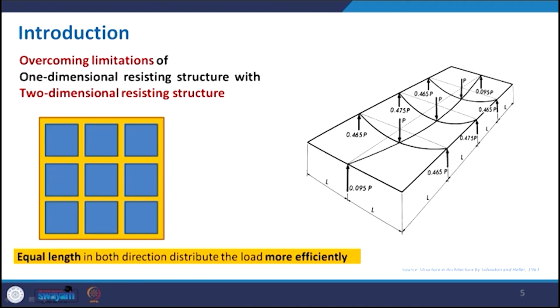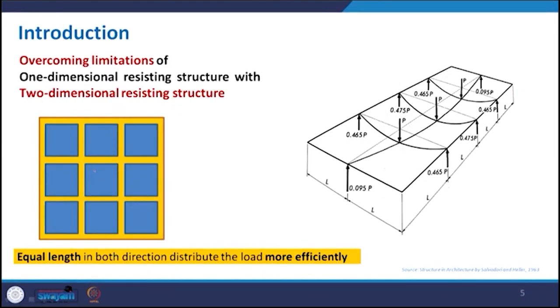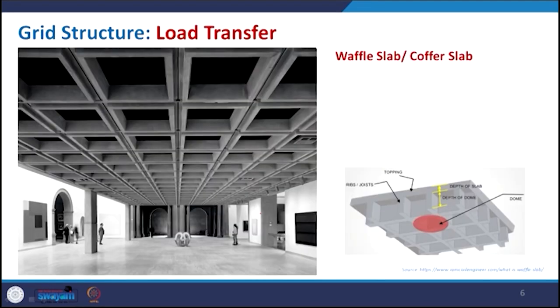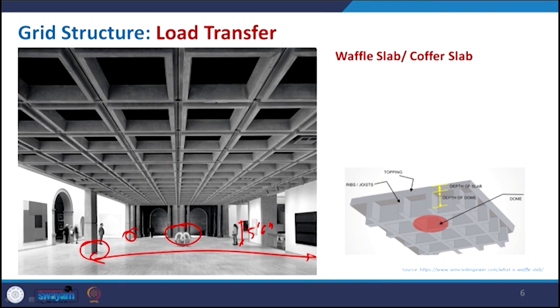The moment you make the grid rectangular, the load is distributed differently depending on the shorter and further corners — load essentially goes more to the shorter side. Here you can see the value 8/18 is the load transmitted to one particular support, while it is less on the other. If you increase the number of shorter-side beams, the load is distributed further. This shows that equal length in both directions distributes the load more efficiently. With a 3×3 grid of equal size, any point load anywhere will be distributed most efficiently.